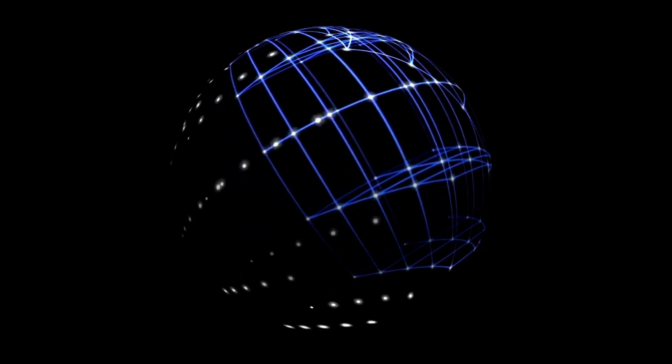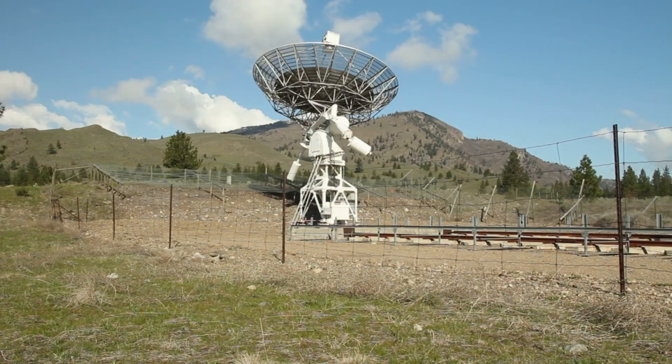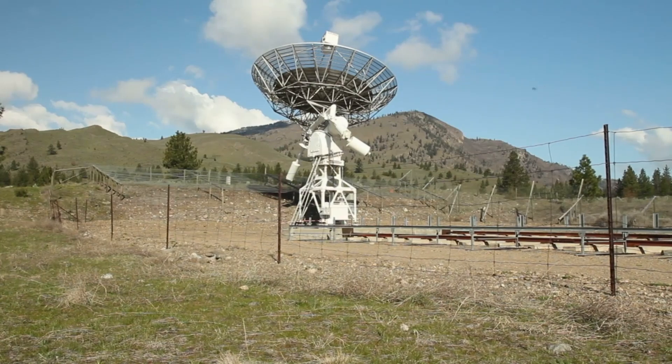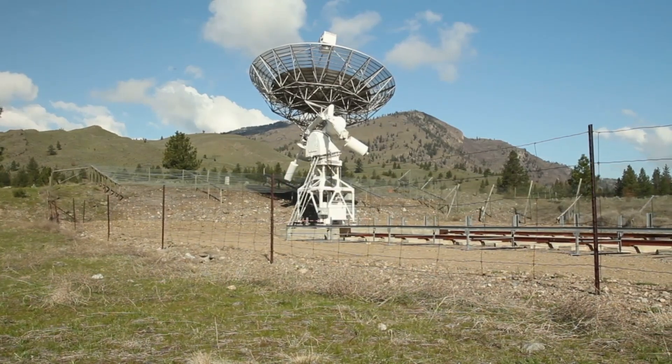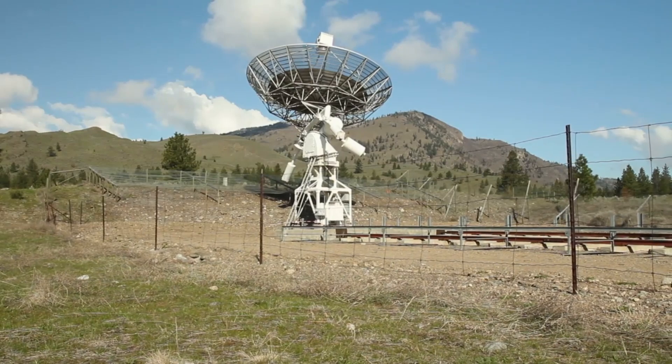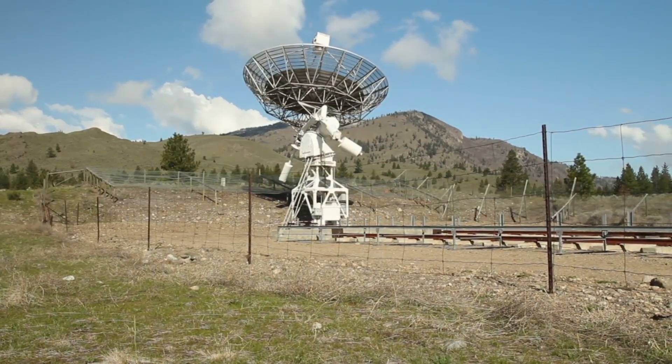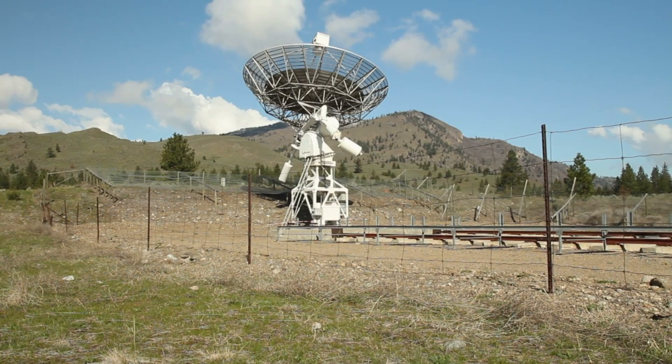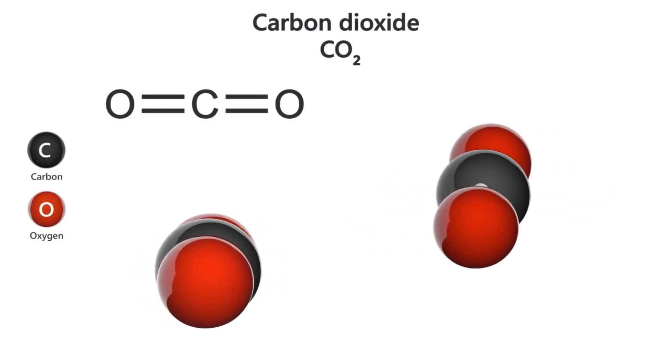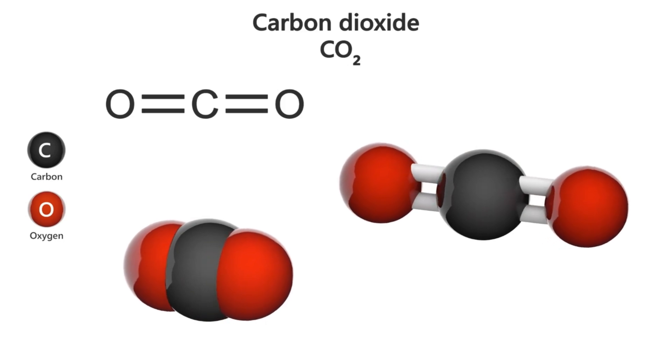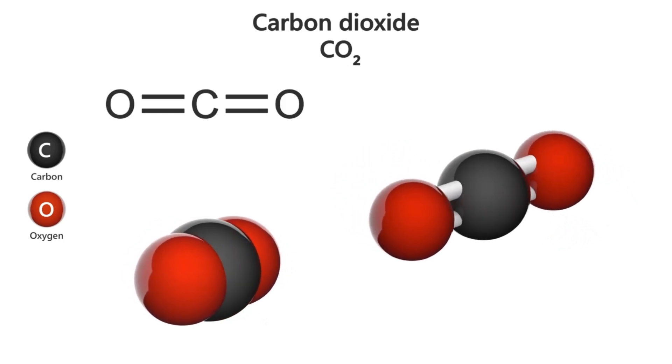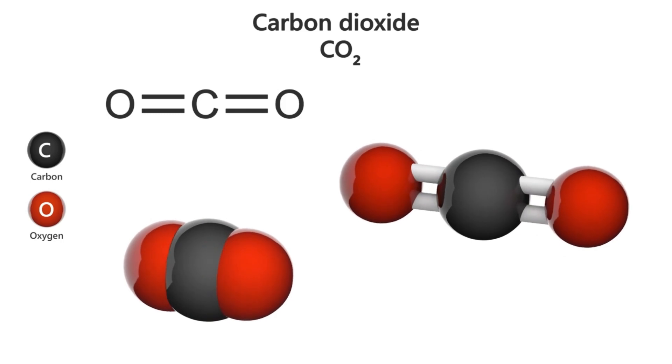But what truly sets it apart is the composition of its atmosphere. Using its unmatched infrared sensitivity, the James Webb Space Telescope has identified the presence of carbon compounds, specifically methane and carbon dioxide, within K2-18b's atmospheric envelope. This points to the possibility of a hydrogen-rich atmosphere overlaying a planet covered in oceans, a configuration that could support life, or at least the kind of chemistry associated with it.